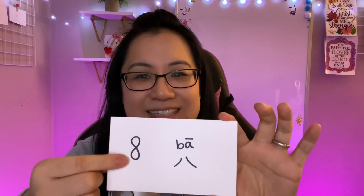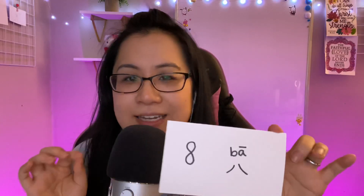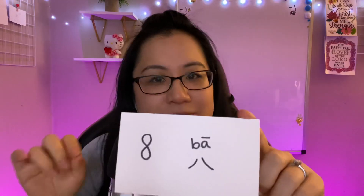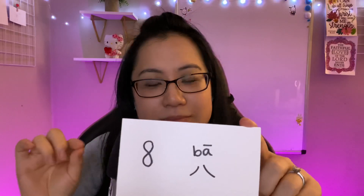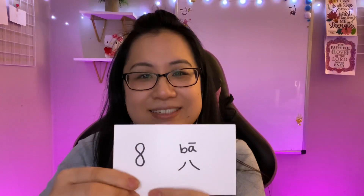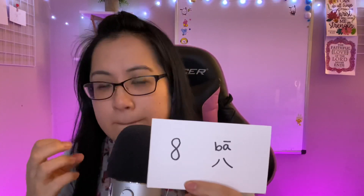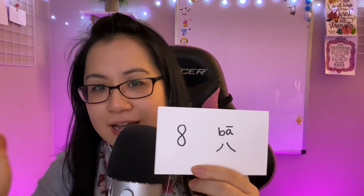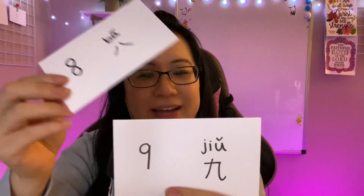Eight is ba. Pa. Pa. That's the mustache character. And it's not a hard ba — it's ba, a little more gentle. Pa. Liu, chi, pa. Very good.